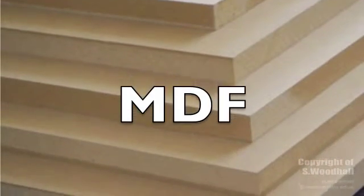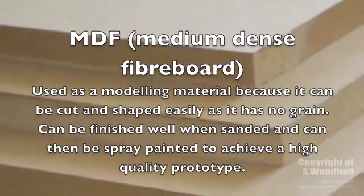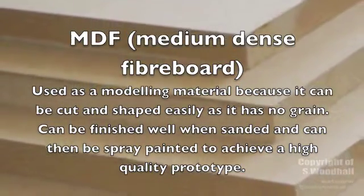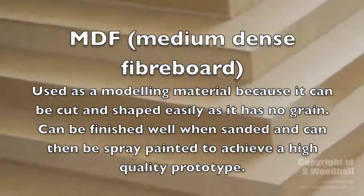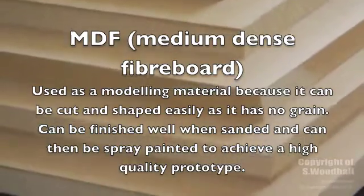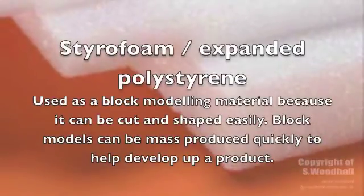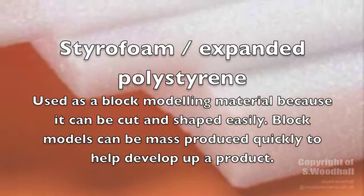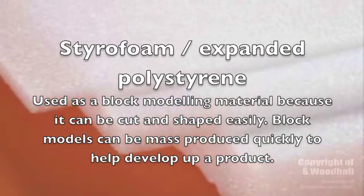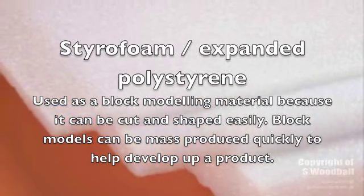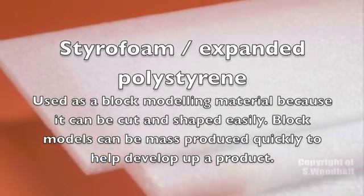There are two materials that are used to create block models. The first is MDF and the second is styrofoam. MDF is used as a modeling material because it can be cut and shaped easily as it has no grain. It has an excellent finish when sanded and can be spray painted to achieve a high quality finish. Styrofoam, which is essentially expanded polystyrene, is used because it too can be cut and shaped easily, but models can be produced much quicker to help refine ideas.